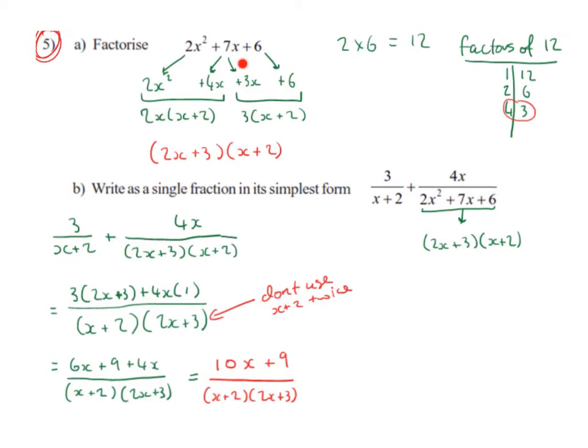So to factorize 2x squared plus 7x plus 6, we end up with 2x plus 3 multiplied by x plus 2. That's the answer to Part A. Part B: write as a single fraction in its simplest form.